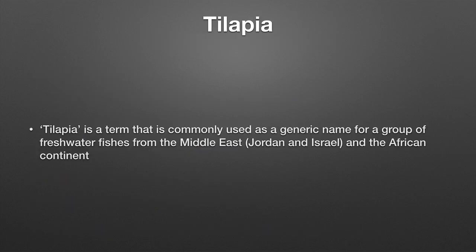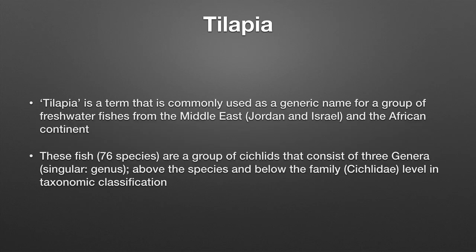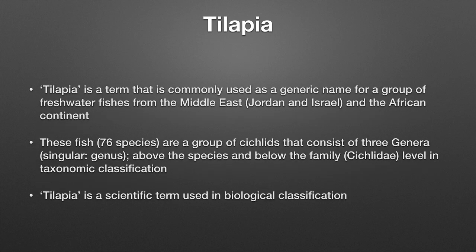Actually, tilapia refers to a group of freshwater fish that include more than 70 species, and they originate from Jordan, Israel, and the African continent. The term tilapia is commonly used as a generic name for a group of freshwater fishes from the Middle East and the African continent. There are 76 known species of this group of cichlids consisting of three genera. The word tilapia is also a scientific term used in biological classification.